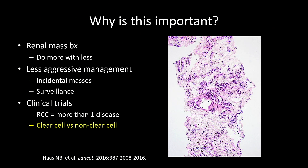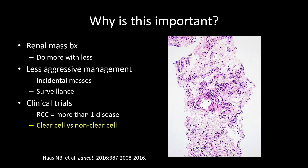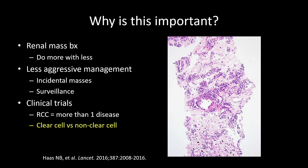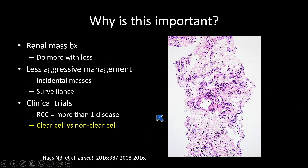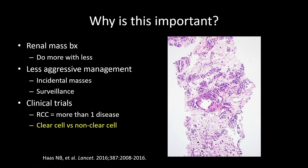There is a trend toward less aggressive management of renal tumors. If you have a very small renal mass, there may be consideration for surveillance, and the diagnosis we make in a biopsy could be relevant for that. There is also increasing recognition that renal cell cancer is more than one disease, and dividing tumors into clear cell or non-clear cell types may be important for management, especially in metastatic renal cancer. Clinicians would like to know, ideally, if we have a clear cell or non-clear cell tumor.